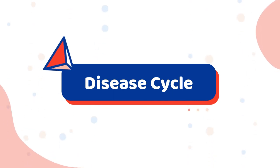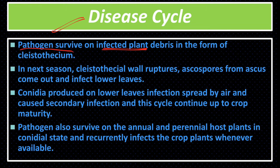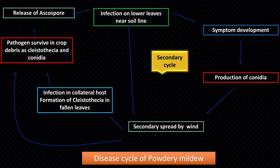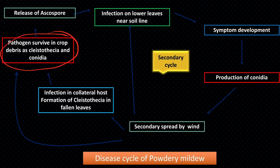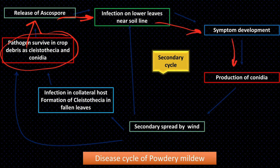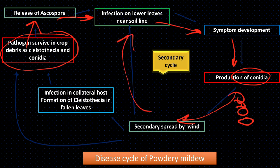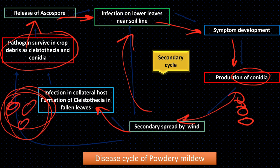Disease Cycle: The pathogen survives in infected plant debris in the form of cleistothecia. The cleistothecia rupture and ascospores are released. These ascospores cause infection on the lower leaf surface and symptoms appear. After the symptoms, conidia are formed in chains and are carried by wind to other plant leaves, causing infection. At the end of the crop season, the pathogen forms cleistothecia containing asci and ascospores, which survive and act as primary inoculum in the next season.